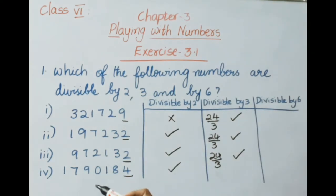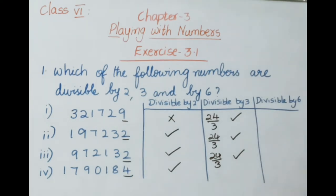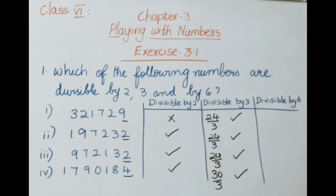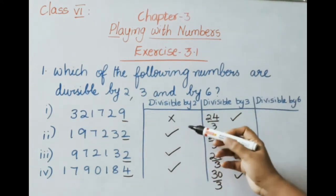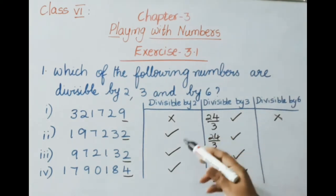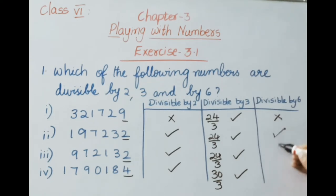Now we check divisibility by 6. If a number is divisible by both 2 and 3, then it is also divisible by 6. The first number 3,21,729 is not divisible by 2 but is divisible by 3, so it is not divisible by 6. The remaining three numbers were divisible by both 2 and 3, so all three are divisible by 6.